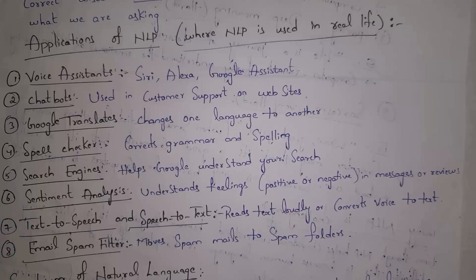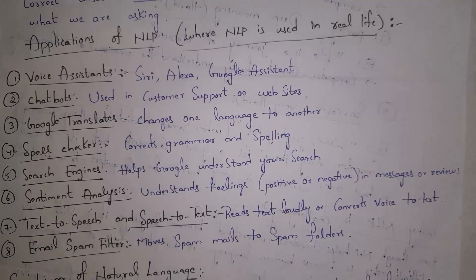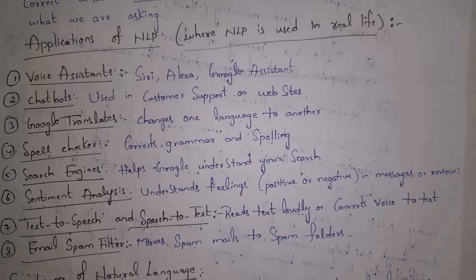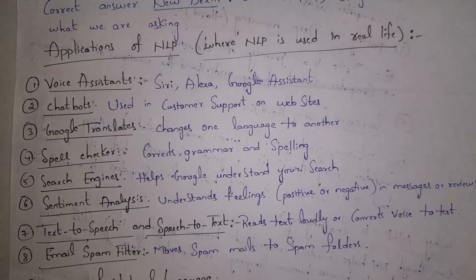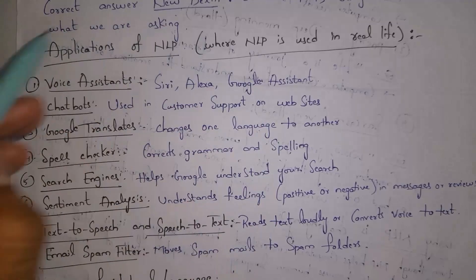The fifth application is search engines. In a search engine like Google, we can search for information. Whenever we type any textual sentence in Google, Google understands it with the help of NLP. The sixth application is sentiment analysis, where the computer understands our feelings — whether positive or negative — by seeing our messages or reviews using NLP. The seventh application is text-to-speech and speech-to-text conversion, where computers convert voice to text or text to voice using NLP. The eighth application is email spam filtering — Gmail automatically detects spam emails and places them in a folder using NLP.